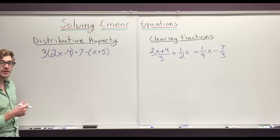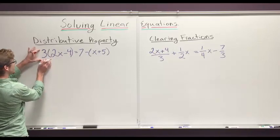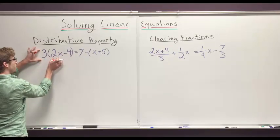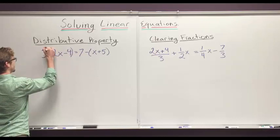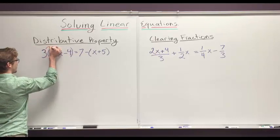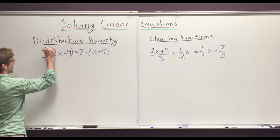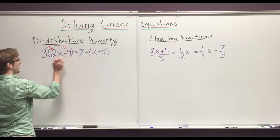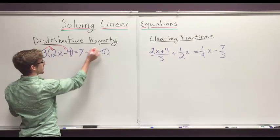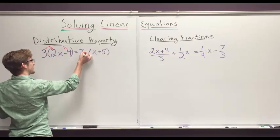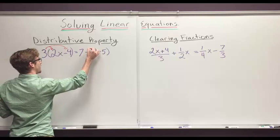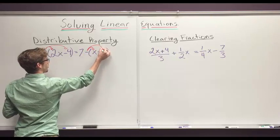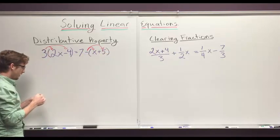The distributive property simply means that we take what's on the outside and multiply it by each piece on the inside. So we're going to take this 3 and multiply it to the 2x, and we're going to take this 3 and multiply it to the negative 4. And we're going to do the same thing on this side. We're going to take this negative and multiply it by this positive x, and we're going to take the negative and multiply it by this positive 5.